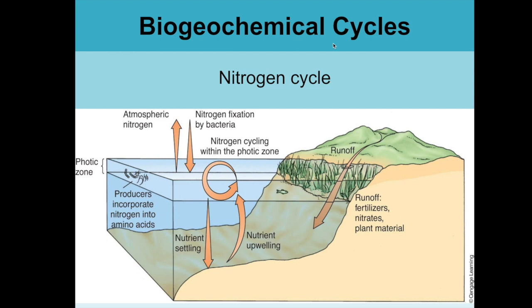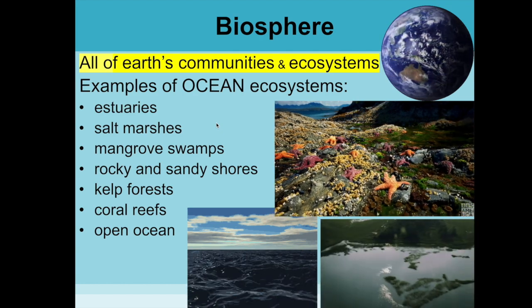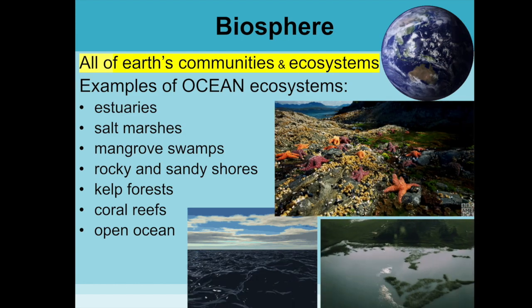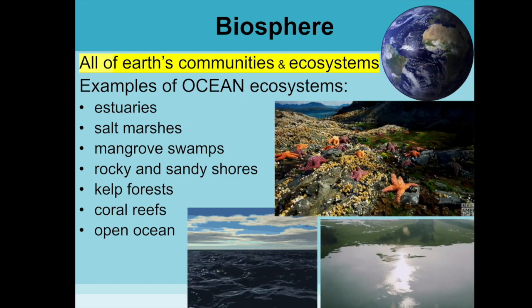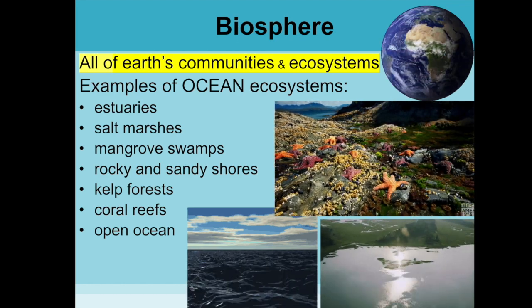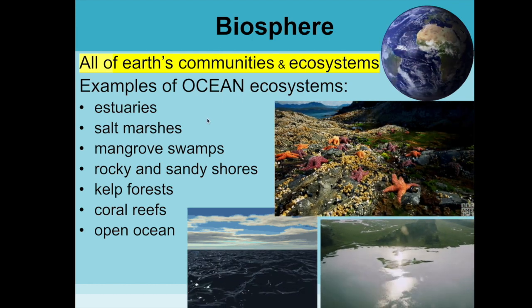Another biogeochemical cycle is the nitrogen cycle. On land, very few things can fix nitrogen from the air — certain bacteria, lightning strikes, and some plant types — but nitrogen cycles through the ecosystem, including via fertilizer runoff moving through land and water. The biosphere as a whole is made up of many delicate communities and ecosystems. In the ocean, this includes estuaries, saltwater marshes, mangrove swamps, rocky and sandy shores, kelp forests, coral reefs, open oceans, and tide pools.